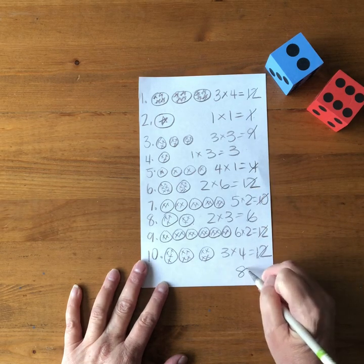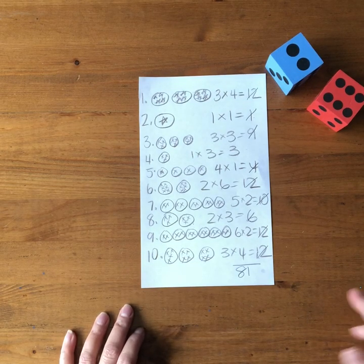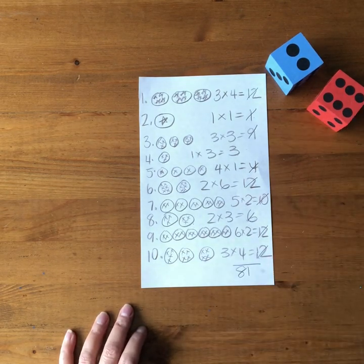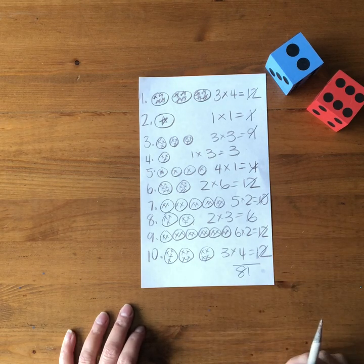So my total is 81 and if I was playing with a partner then they would total up all their products and whoever has the greatest total wins that particular game.